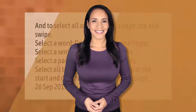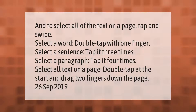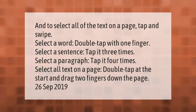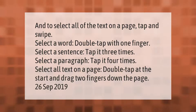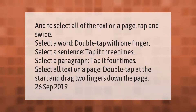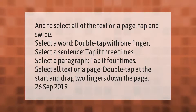To select all of the text on a page, tap and swipe. To select a word, double tap with one finger. To select a sentence, tap it three times. To select a paragraph, tap it four times. To select all text on a page, double tap at the start and drag two fingers down the page.